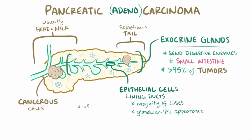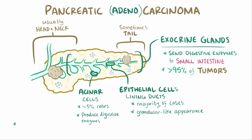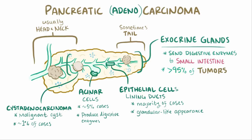Around 5% of exocrine pancreatic carcinomas are caused by malignancies in the acinar cells, which are the cells that produce digestive enzymes like trypsinogen. Around 1% are cystadenocarcinomas, or malignant cysts. There are also other types of pancreatic cancer, but those are even more rare.